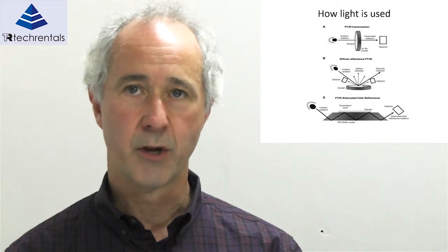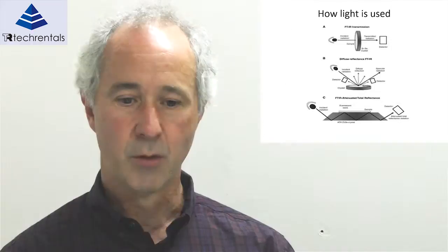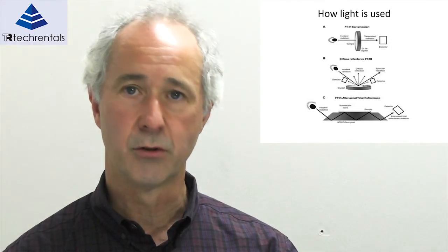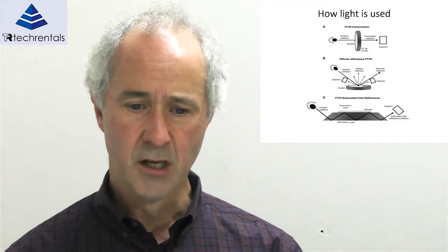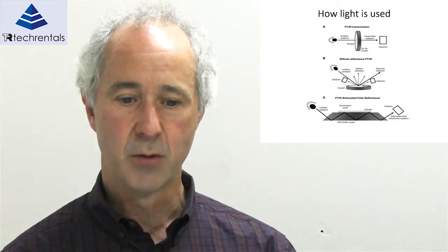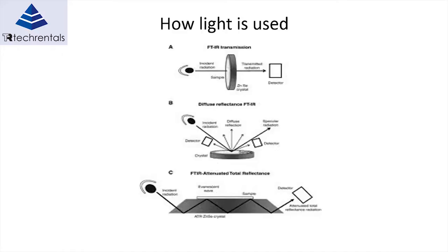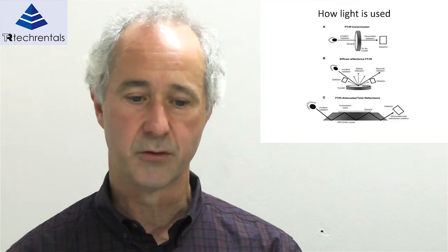There are three different modes of infrared spectroscopy. The first is full transmission, where light goes completely through the material and is measured by a detector. The second, for materials that light can't transmit through, is diffuse reflection. There is also a method using internal reflectance effects of a crystal, where light bounces through the crystal similar to a fibre optic cable, and interacts with the surface and our material so we can measure its properties.